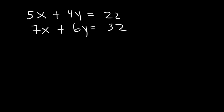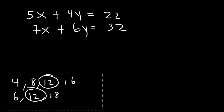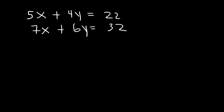So first, we need to find the least common multiple between 4 and 6. Multiples of 4 are 4, 8, 12, and 16. Multiples of 6 are 6, 12, 18. Notice that the least common multiple is 12. So therefore, I'm going to multiply the first equation by 3 so that the 4y will change into positive 12y. The second equation I'm going to multiply by negative 2 so I can get negative 12y. Positive 12y plus negative 12y adds up to 0.